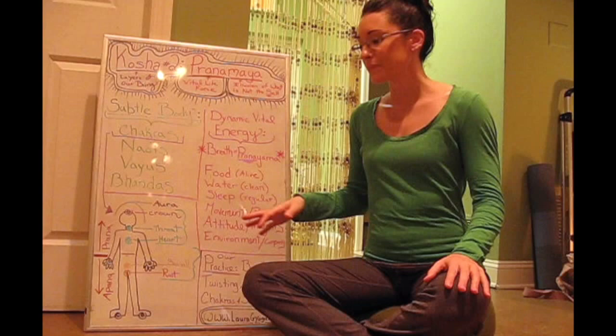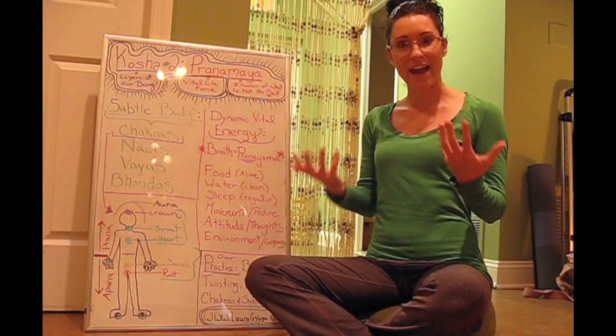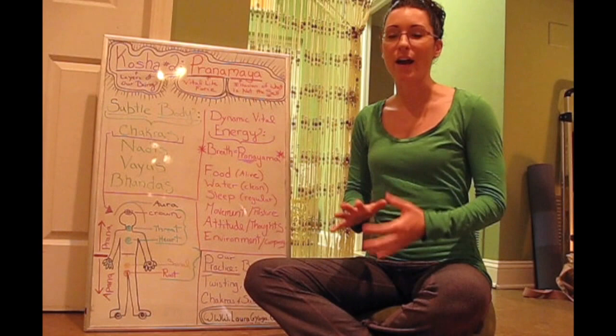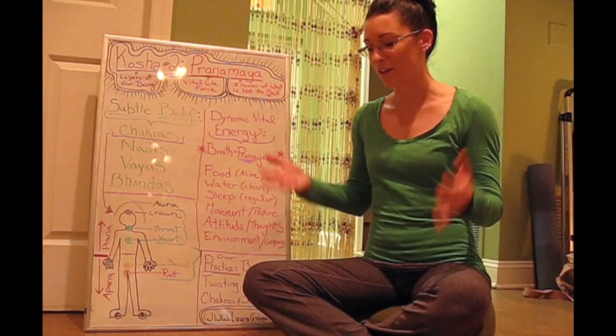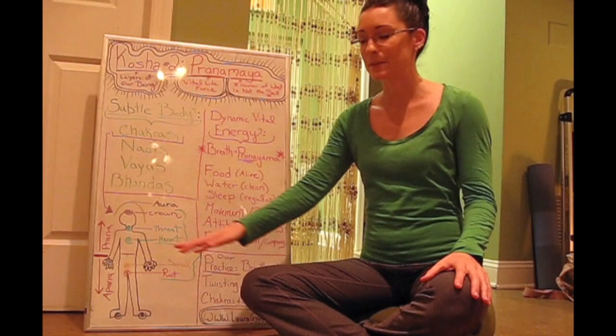So for prana, think of sun salutations. We're lifting up. There's a lot of dynamic movement. We're creating energy. For apana, think grounding and settling poses like child's pose, seated forward bends, deep squatting hip openers. Those are the downward kind of movements, pigeon pose. Things that are connected to the earth and have more of a downward momentum would connect us more strongly to apana.